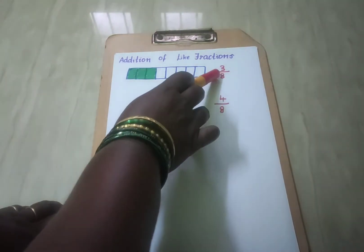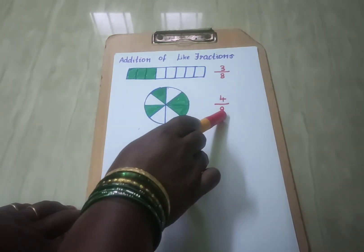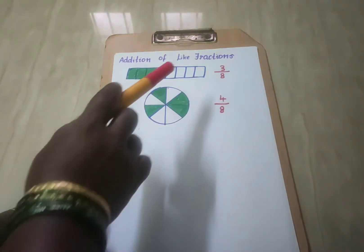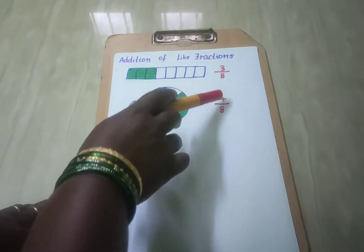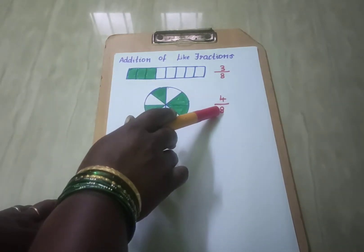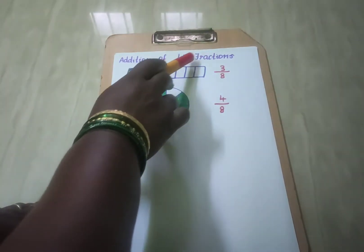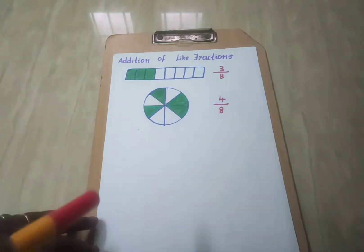Look at the denominators — both the denominators are same. So if the denominators are same, they are said to be like fractions.